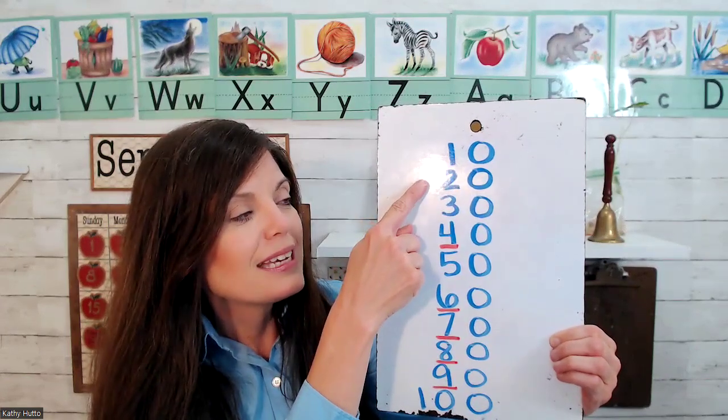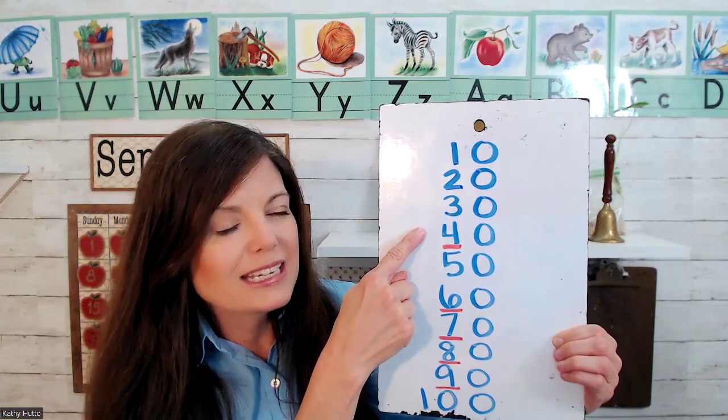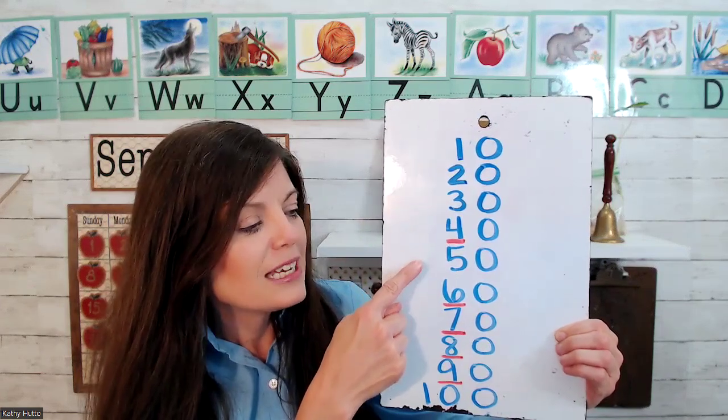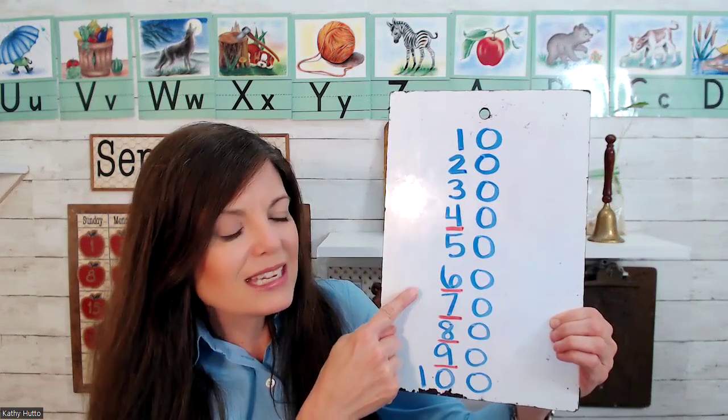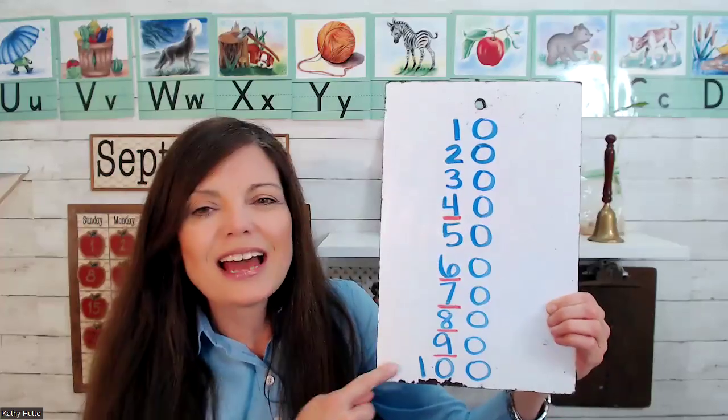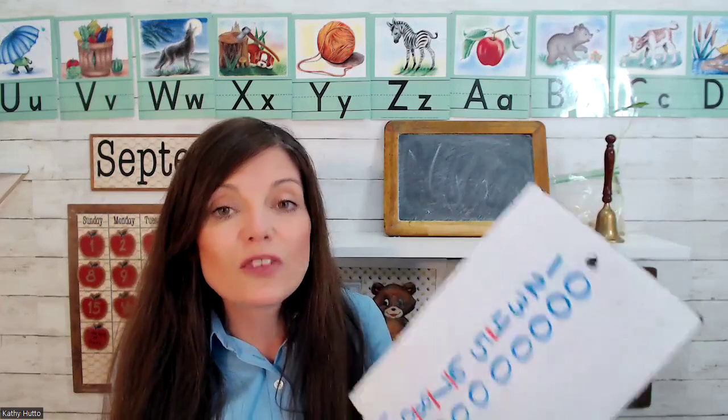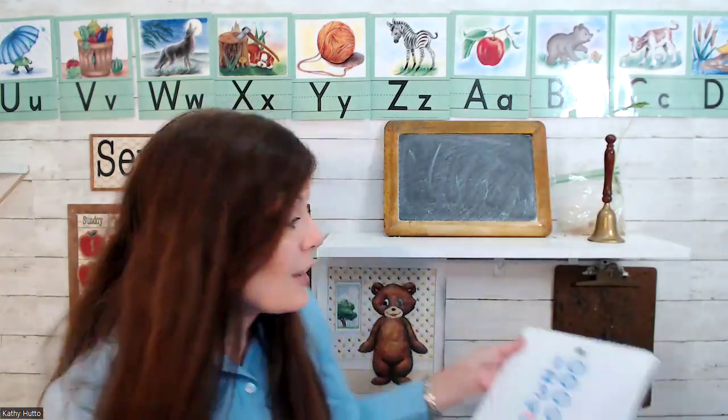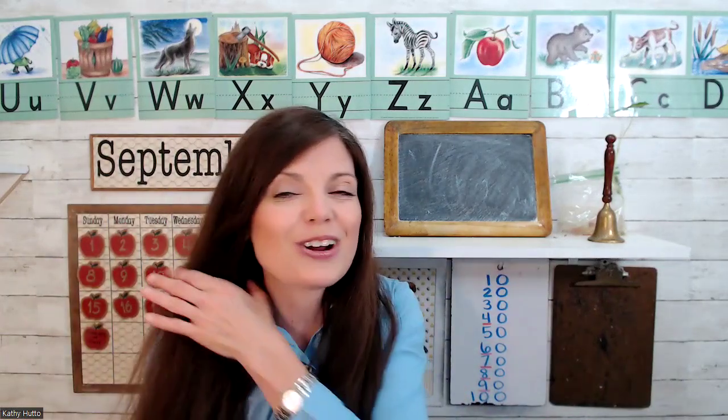10, 20, 30, 40, 50, 60, 70, 80, 90, 100. Now these are important and we need to learn these first because, like I said, we're going to need them at the end of every row once we get started.